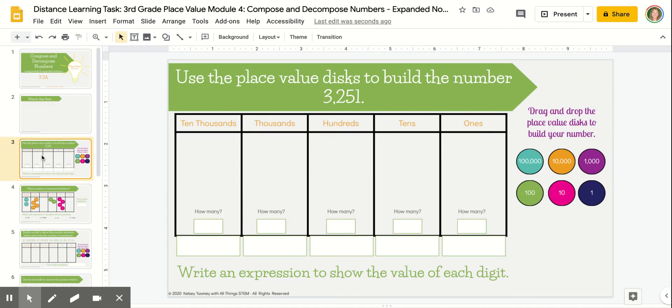In this first example, you have a smaller number given at the top, 3,251. Our goal here is to use our place value disks to model the number, then record the value of each digit using an expression rather than a numeric value.